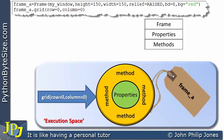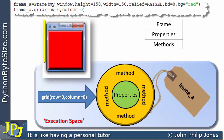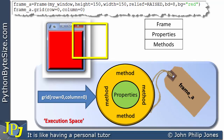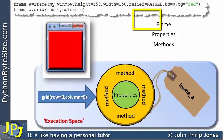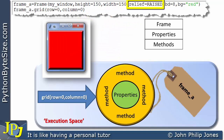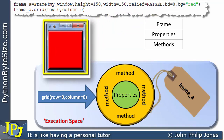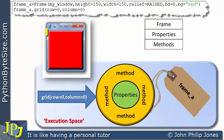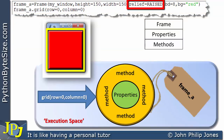The runtime for this program shows the window with the frame inside it. The frame is red because we set bg equal to red. It's raised — you can see that at the edges of the border — because we set relief to raised. The border is quite thick because we set border width to 8. The widget is 150 by 150 pixels.